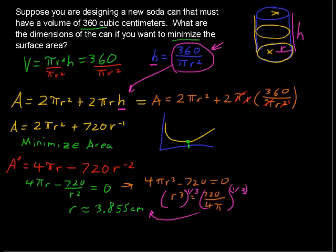So, let's get a nice new color here for the height. The height equals 360 over pi times 3.855 squared. And the height, then, is approximately equal to 7.7 centimeters.